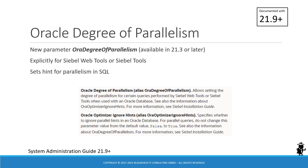A parameter has been circulated via Oracle Support named Aura Degree of Parallelism. It appears this parameter was introduced in 21.3 or later and is available to set already. It is now officially documented in the 21.9 Bookshelf. It is explicitly for Siebel Web Tools or Siebel Tools, and you set it from its default value of auto — letting the database handle parallelism — to an explicit numeric value such as two or four, which could help improve performance for Siebel Web Tools or Siebel Tools.